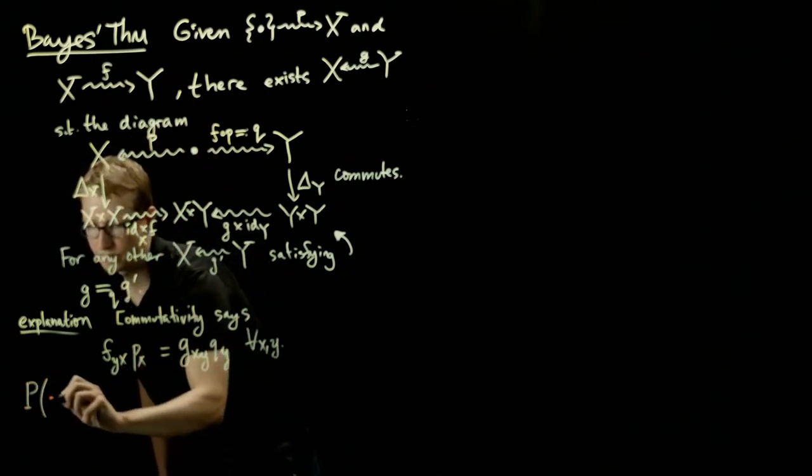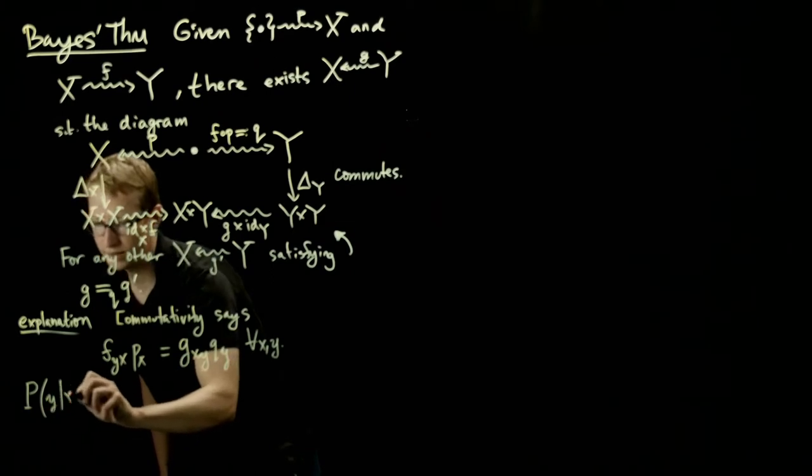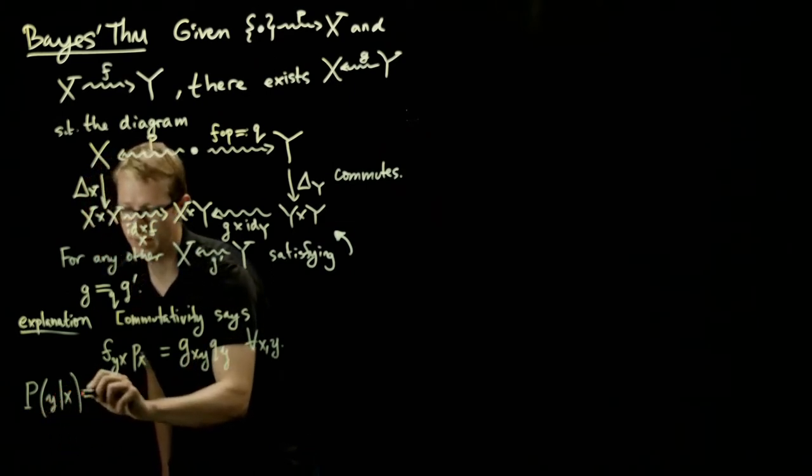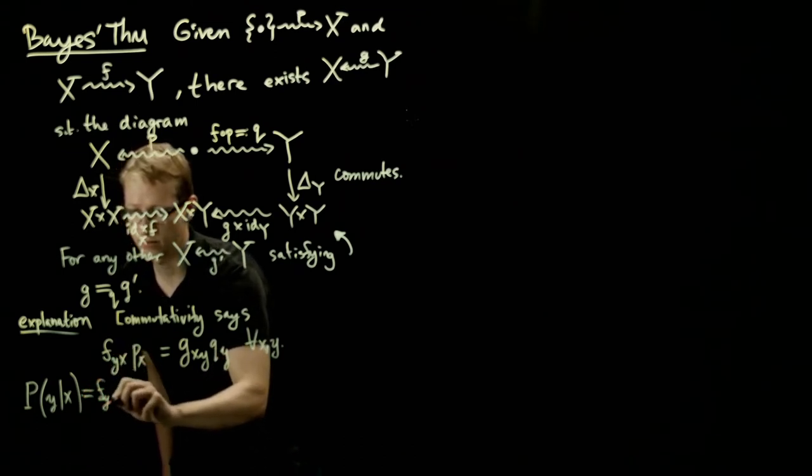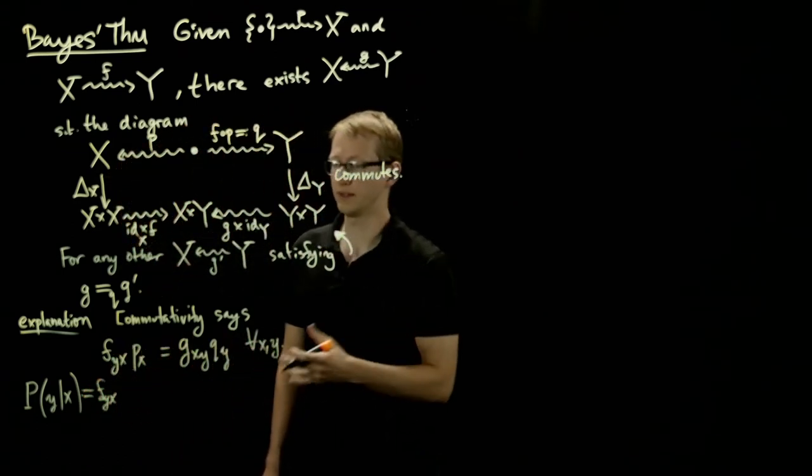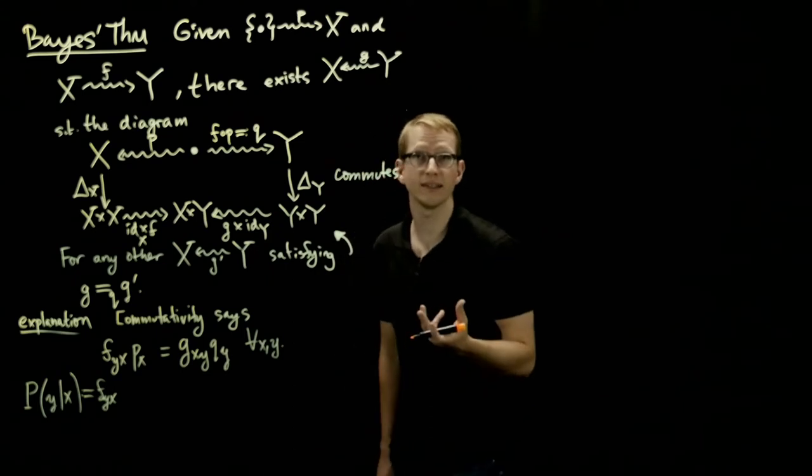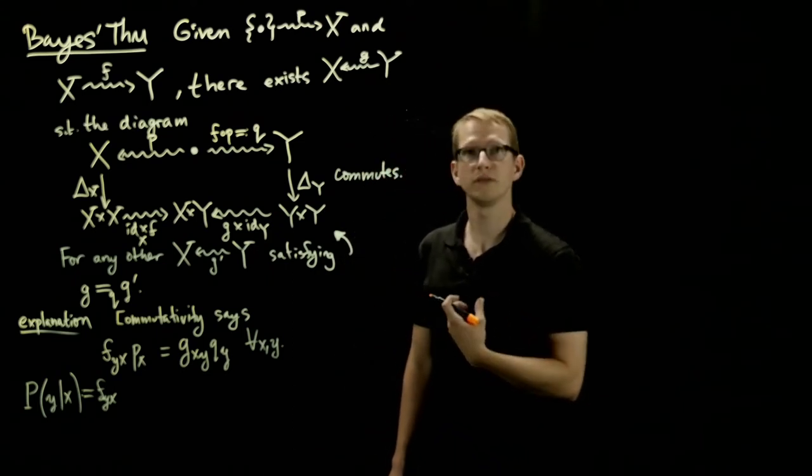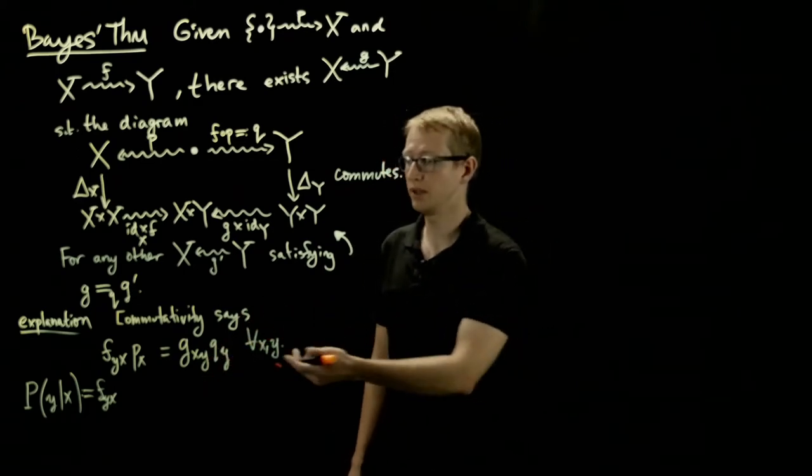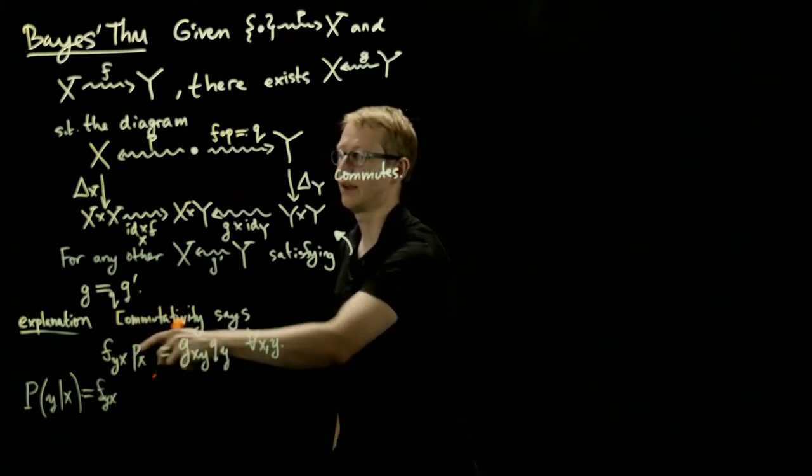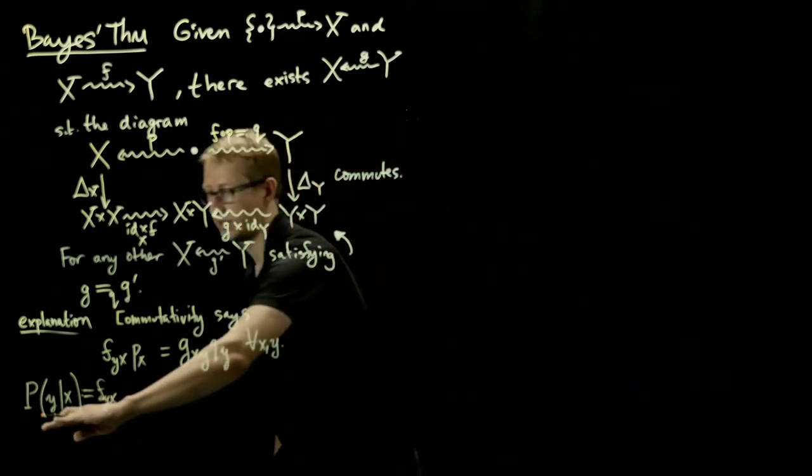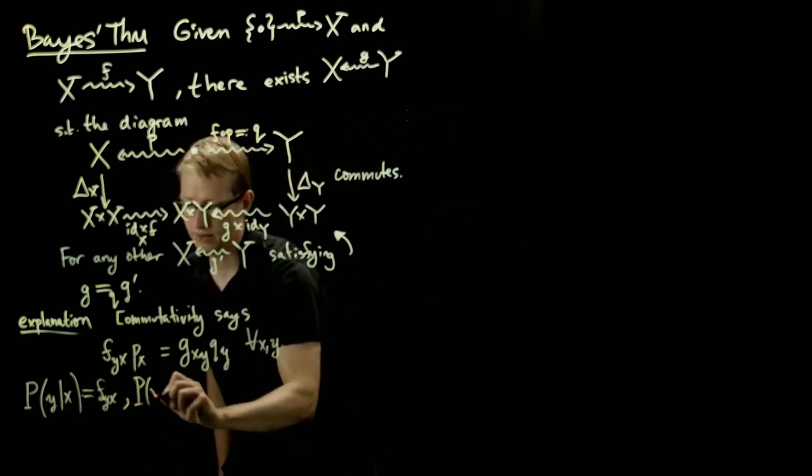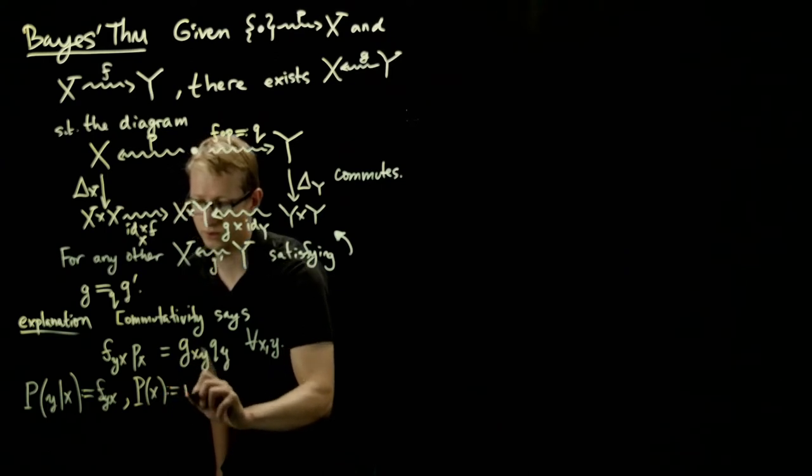Now let's introduce some notation to see how to understand this. Let's define p of y given x, so this is the probability of y given x, to be exactly f(y,x). That's exactly what f means - f is a stochastic map. It's not corresponding to a function, it says if you give me x I will give you y with some probability. The probability is exactly f(y,x). So that's exactly what this conditional probability is, and the probability of x is just little p(x).